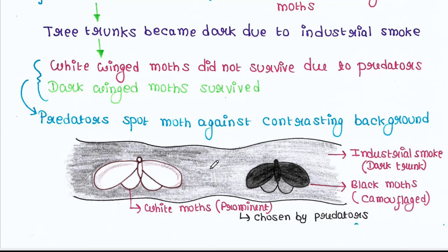Hence, it was easy for the predator birds to pick the white moths. So from this experiment, we can conclude that mutation resulted in variation. And due to their dark color, dark-winged moths were better adapted to the environment. Hence, they were naturally selected, and natural selection leads to evolution. Therefore, dark-winged moths were more in number in the population after the event.